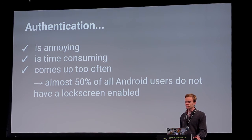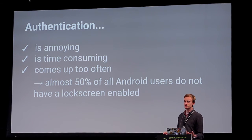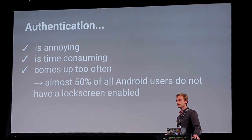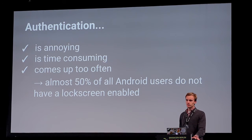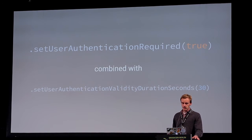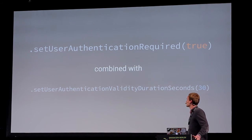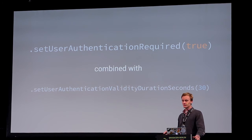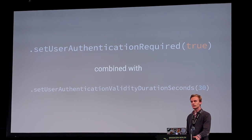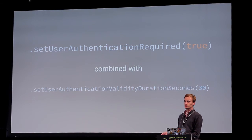The cool part is you can now integrate the authentication process with the device unlock flow. If I pull my device out of my pocket, I can check with the KeyStore whether the user recently authenticated — if yes, I can skip the login screen in my app. Using two methods on the builder — setUserAuthenticationRequired() and setUserAuthenticationValidityDurationSeconds() — you can set a validity window, say 15 or 30 seconds, during which you can access the key without authenticating again.